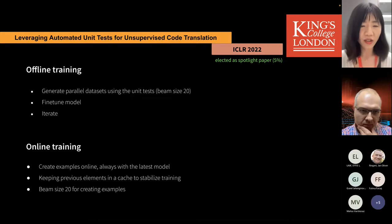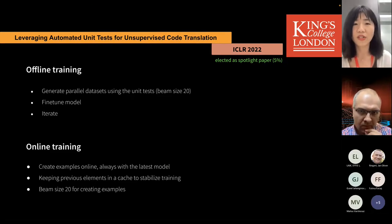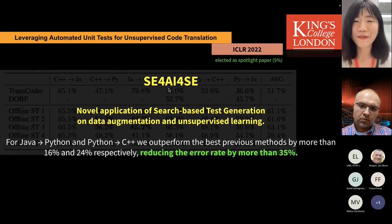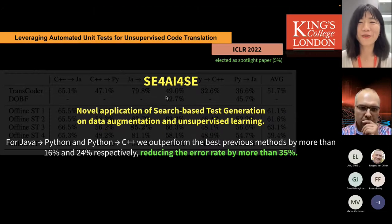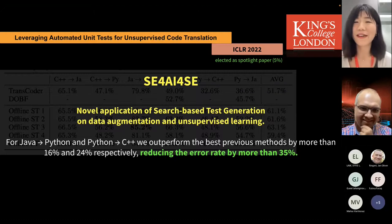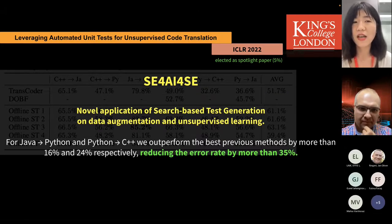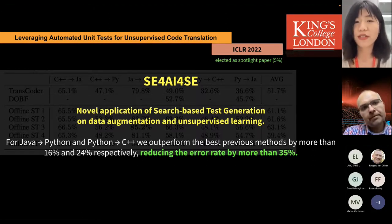We have offline training — generating parallel datasets using unit tests to fine-tune the model — and online training, where the main difference is always using the latest model to generate datasets. The approach is SE for AI for SE: using ML for code translation, then using SE to improve it. It's a novel application of search-based test generation to data migration and unsupervised learning. Results are surprisingly good: 16% improvement for Java-to-Python and 24% for Python-to-C++.